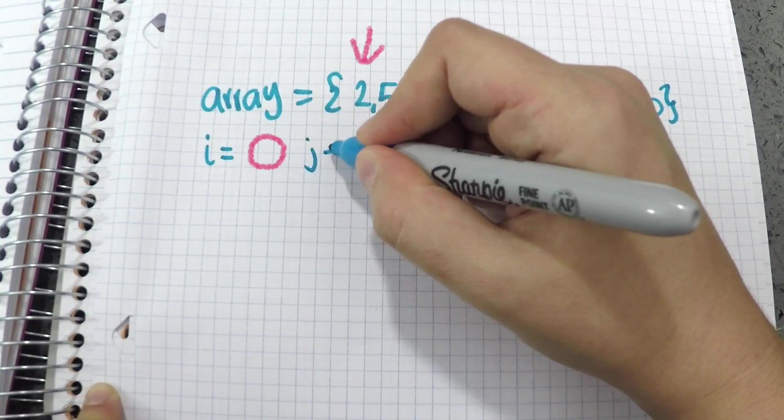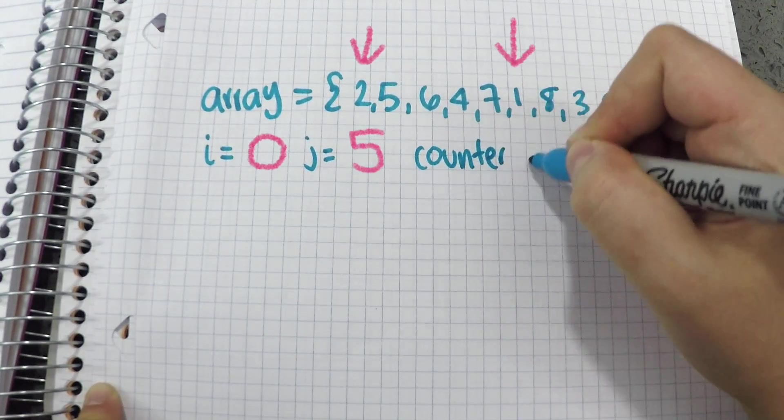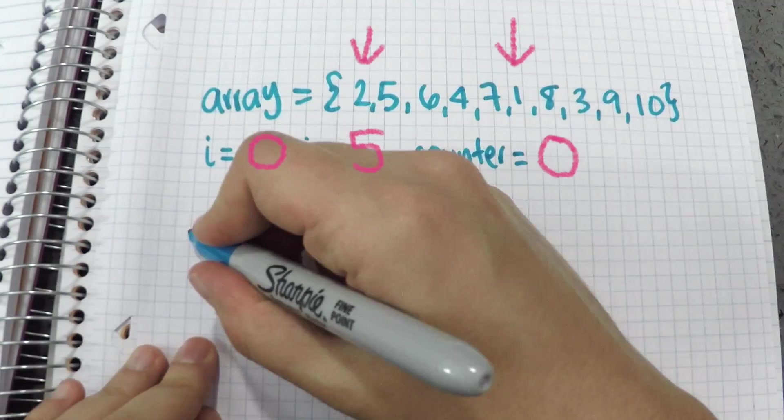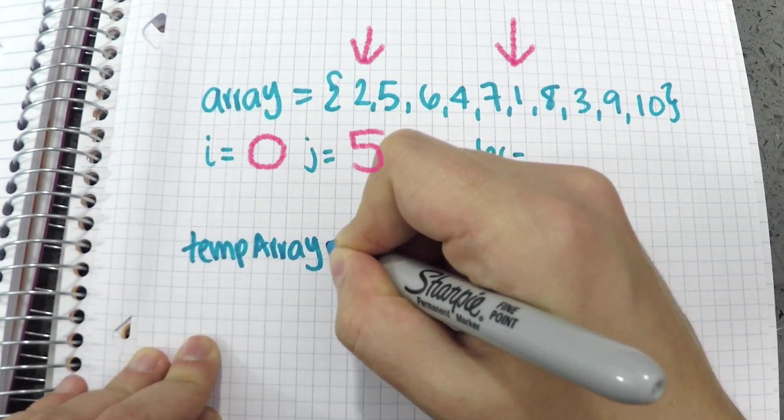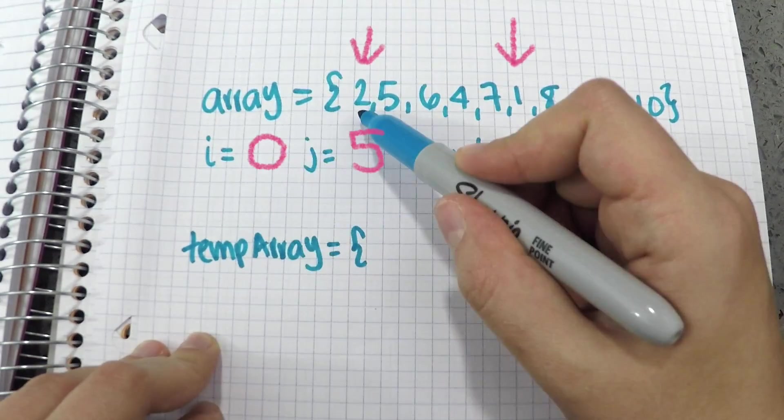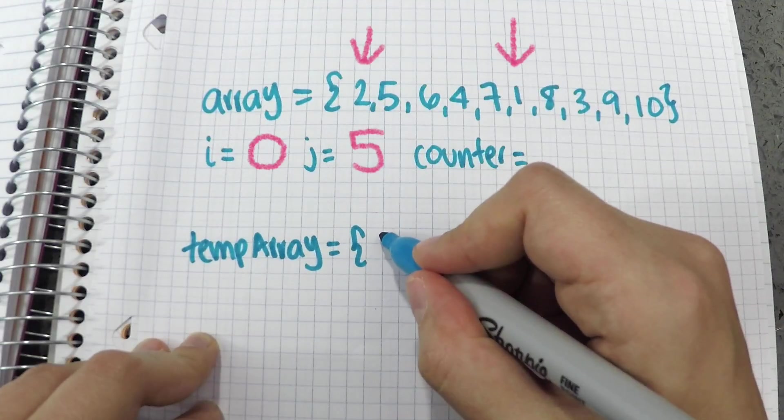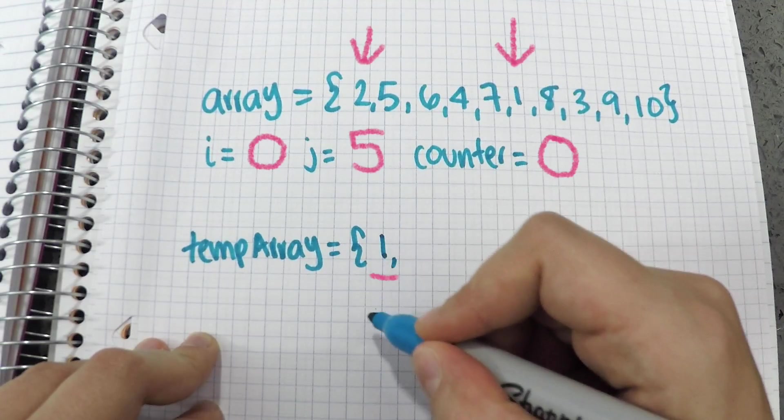So its element is 2, j is the middle index, and the element is 1, and the counter is 0. When I compare the element in i and the element in j, I find that 1 is less than 2, so I save 1 at position 0 in the temporary array.